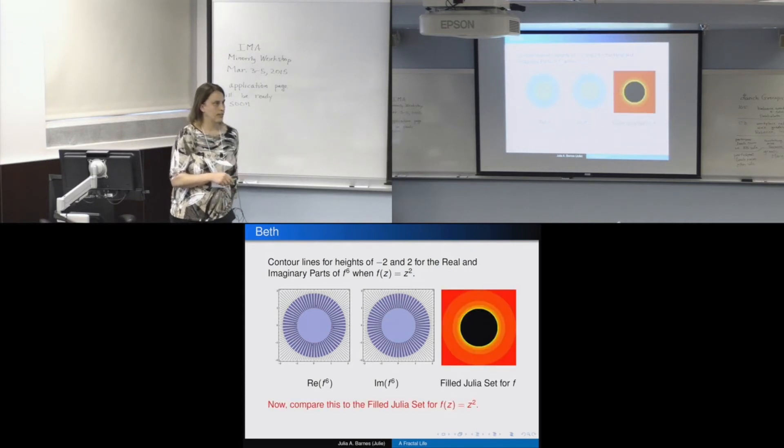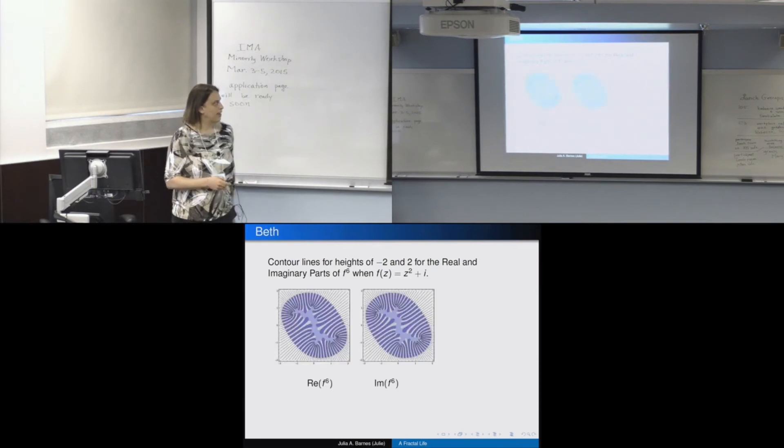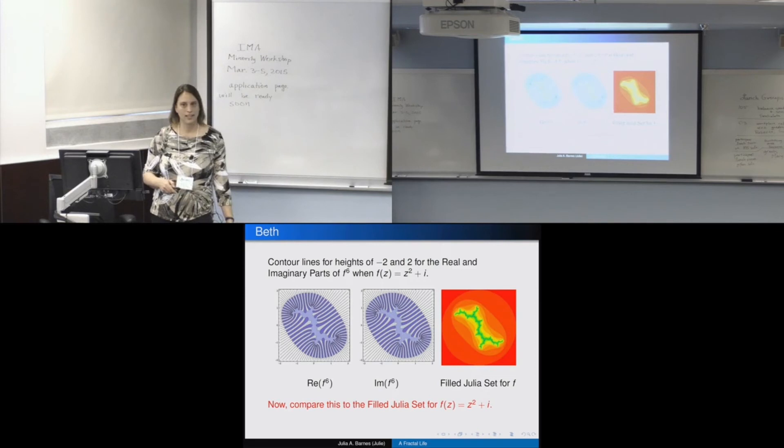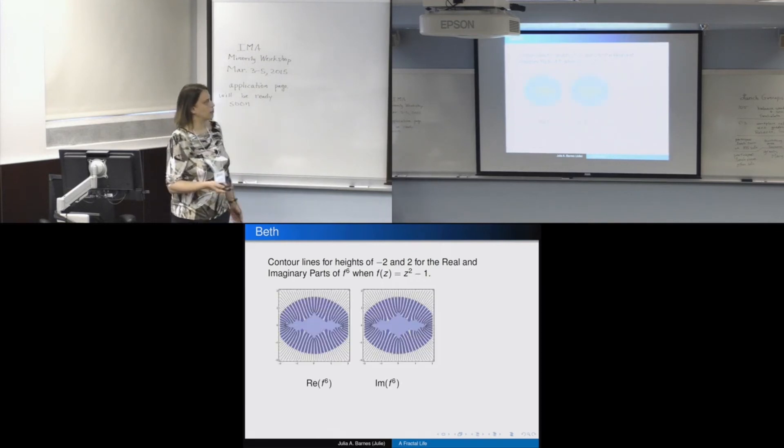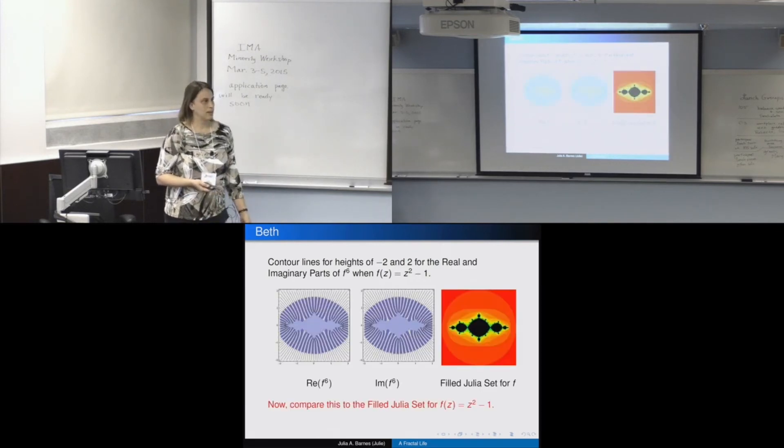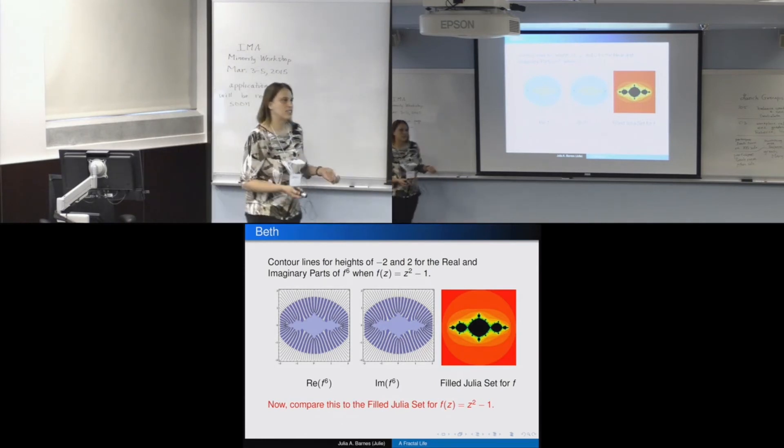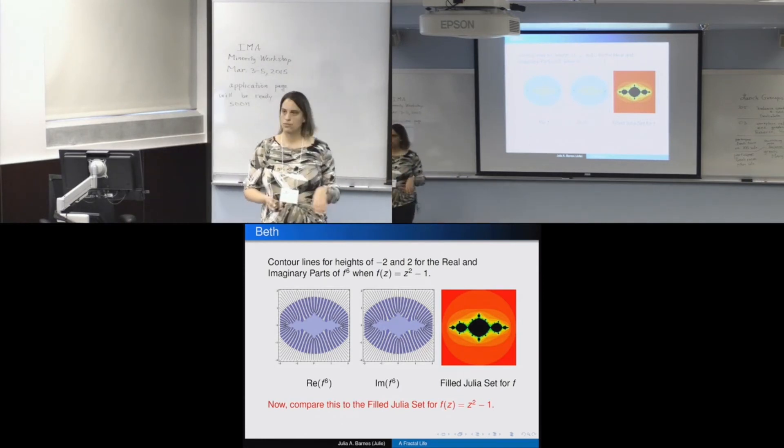And what we ended up doing then was looking at contour plots of pulling off the real and the imaginary parts of iterates of some of these functions and just looking at them. This is contour plots for z squared, z squared, plain boring function. We iterated six times and pulled off the real parts and the imaginary parts. It's a surface, like in Calc 3. So these are contour plots of it. And that was the Julia set. So let's do another one. Here's z squared plus i. There's your contour plots, and there's the Julia set. And then here's another one. It was like one of those things that make you go, hmm.